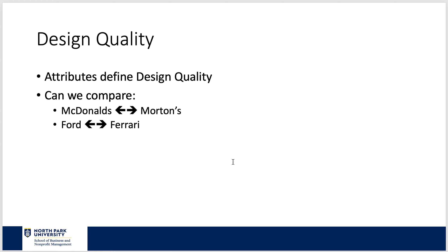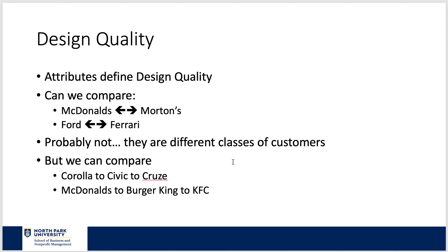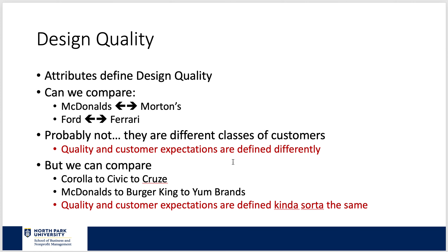Design quality: attributes define design quality. Can we compare McDonald's to Morton's Steakhouse or Ruth's Chris? Can we compare Ford and Ferrari? I would say no — they have different classes of customers, different price points. But can I compare the Toyota Corolla to the Honda Civic to the Chevy Cruze? Can I compare McDonald's to Burger King, KFC, or Taco Bell? Quality and customer expectations are defined differently when products can't be directly compared, but are similar when they can.